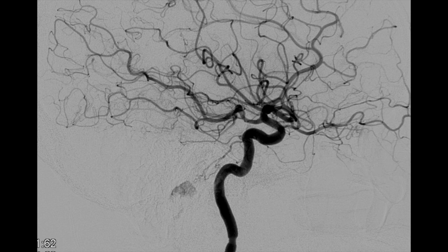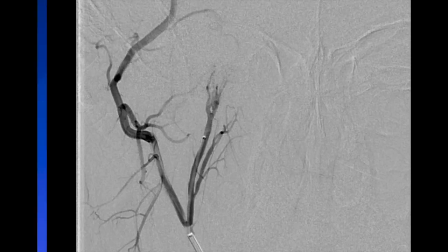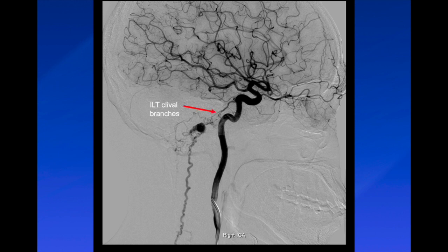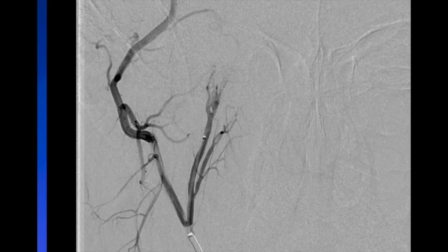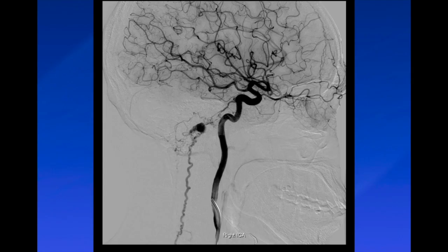On the ICA injection, a clival artery is seen supplying the fistula as well — specifically the inferolateral trunk to the lateral clival artery. After embolization of the ascending pharyngeal artery, the ICA injection now showed that this ILT pathway had become the dominant supply to the fistula.